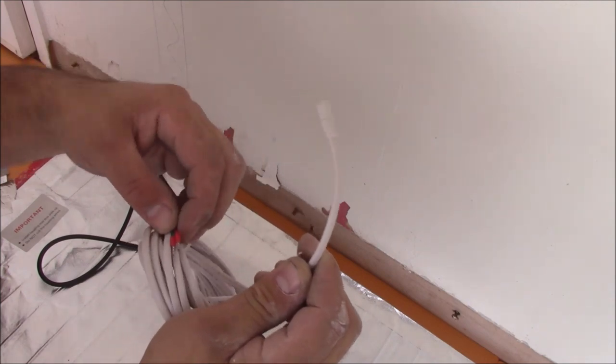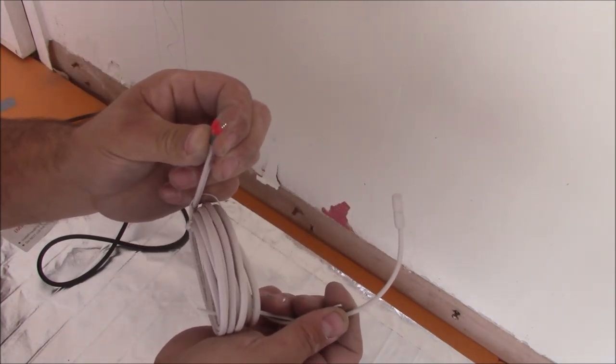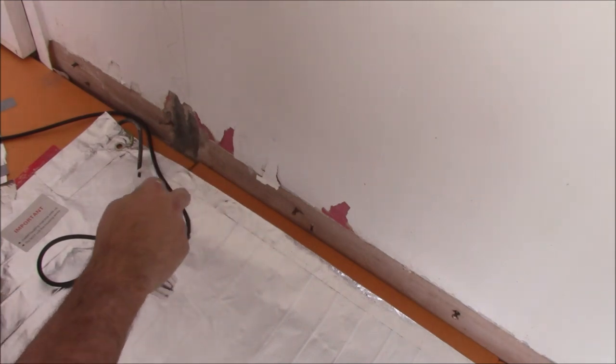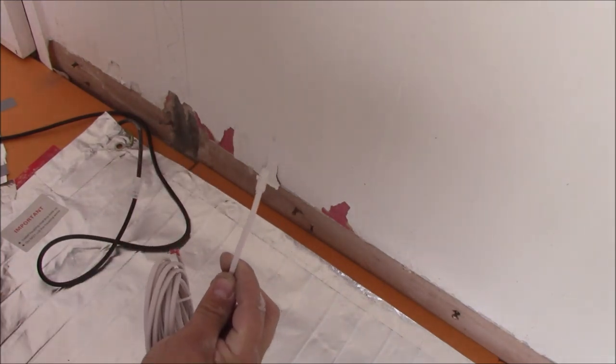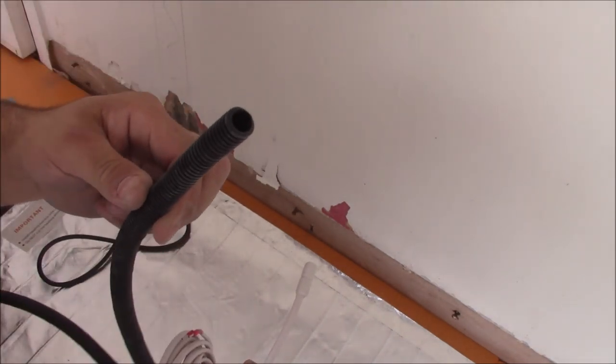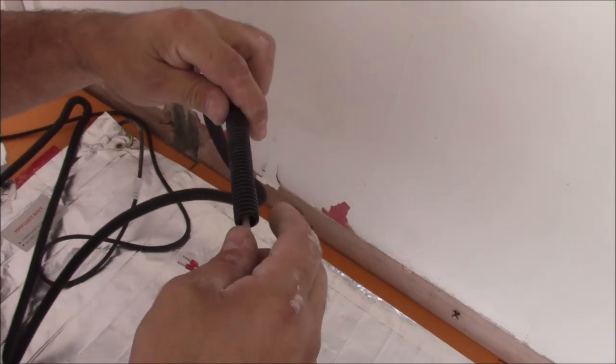This measures the temperature of the floor and sends it to the thermostat. So you need to wire this end to the thermostat and this end you need to place under the mat. Obviously in the supply is also the conduit, so I need to put it into here.